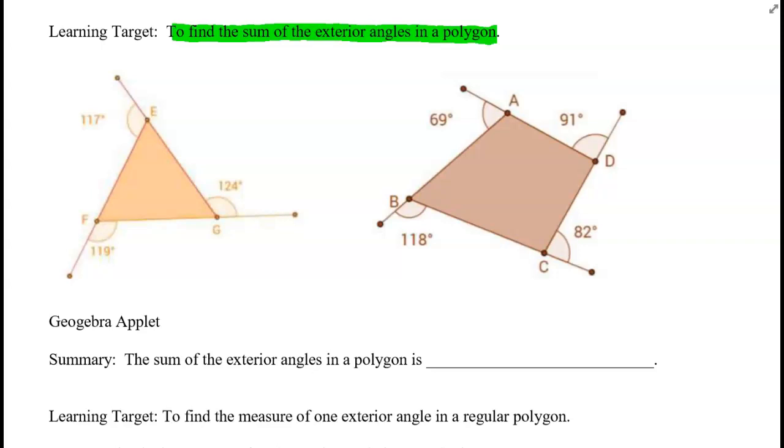So an exterior angle, if we look at this figure, the triangle, an exterior angle is this 117 degrees angle outside the triangle when you extend the lines. So these three angles, the 117, the 119, and the 124, are called an exterior angle.